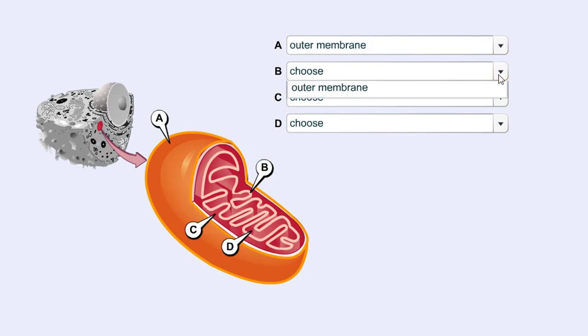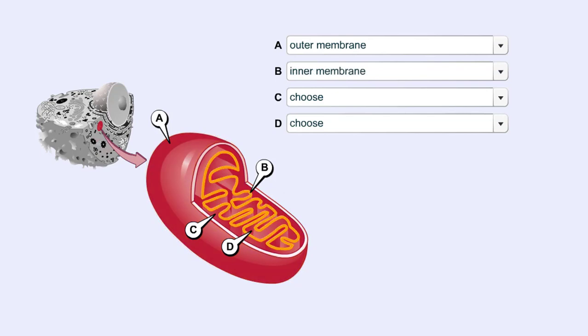Outer Membrane: The outer membrane is not convoluted, as is the inner membrane. Inner Membrane: The protein complexes of the electron transport chain are located here.